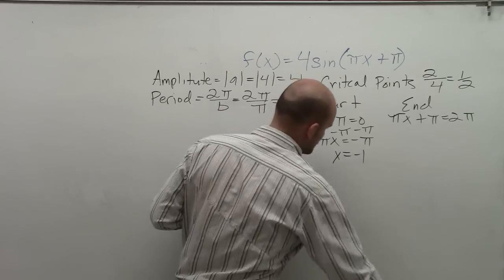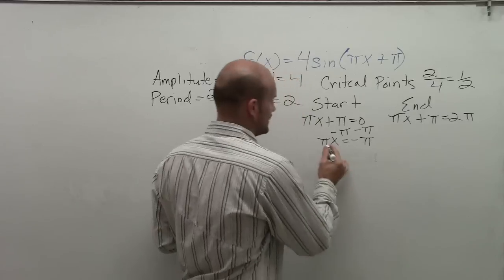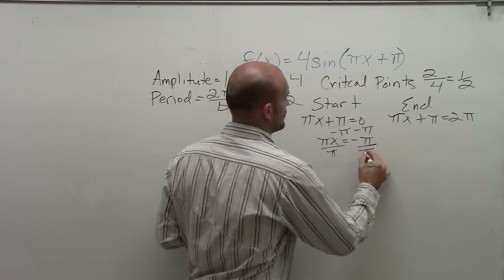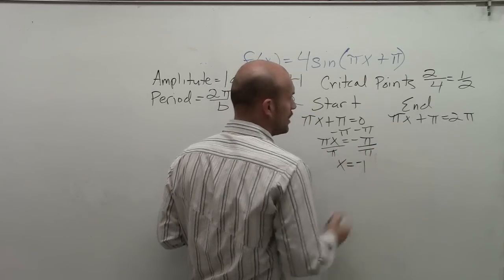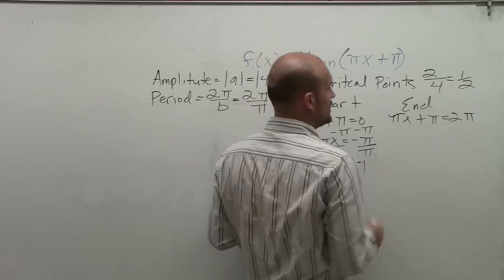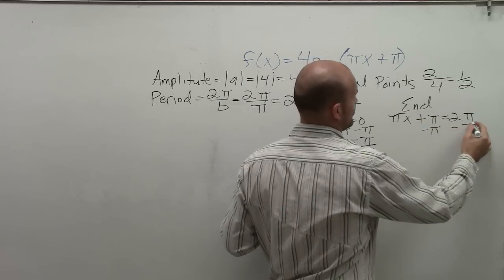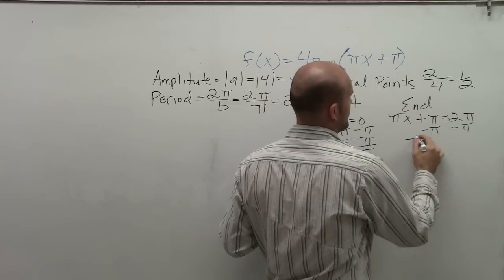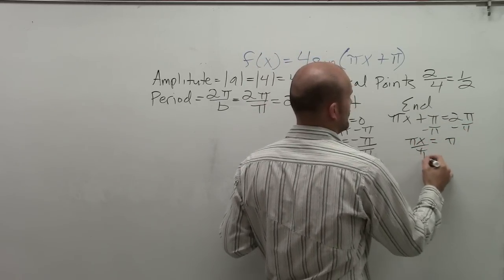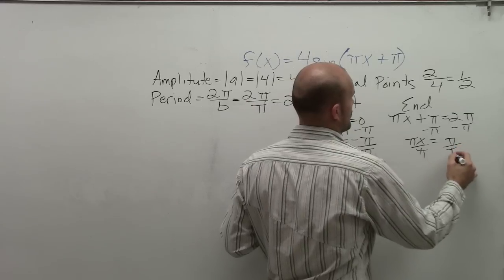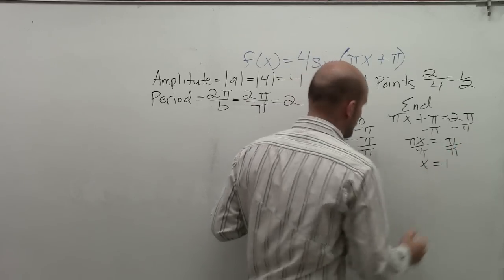Let me show my work. I divide by pi, so x equals negative 1 for the start. For the end, I subtract pi to get pi x equals pi, then divide by pi to get x equals 1.